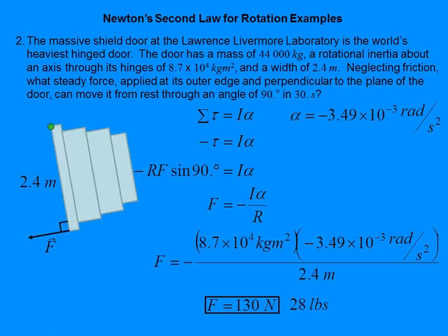She's going to have to push on it for 30 seconds, but 28 pounds is not a very hard push. You just have to constantly apply it to move this massive door — kind of a cool real problem. One big assumption we made: only one torque, from her force. Therefore we assumed no frictional effects, which of course, if there were any, would make this a very hard door to move.